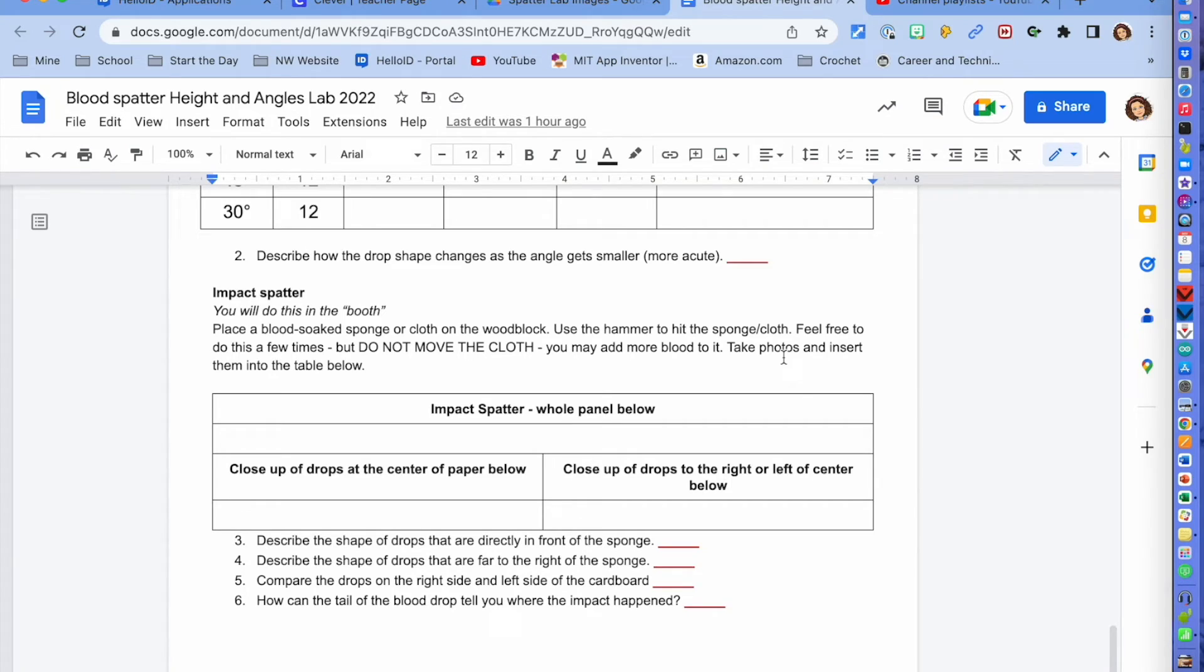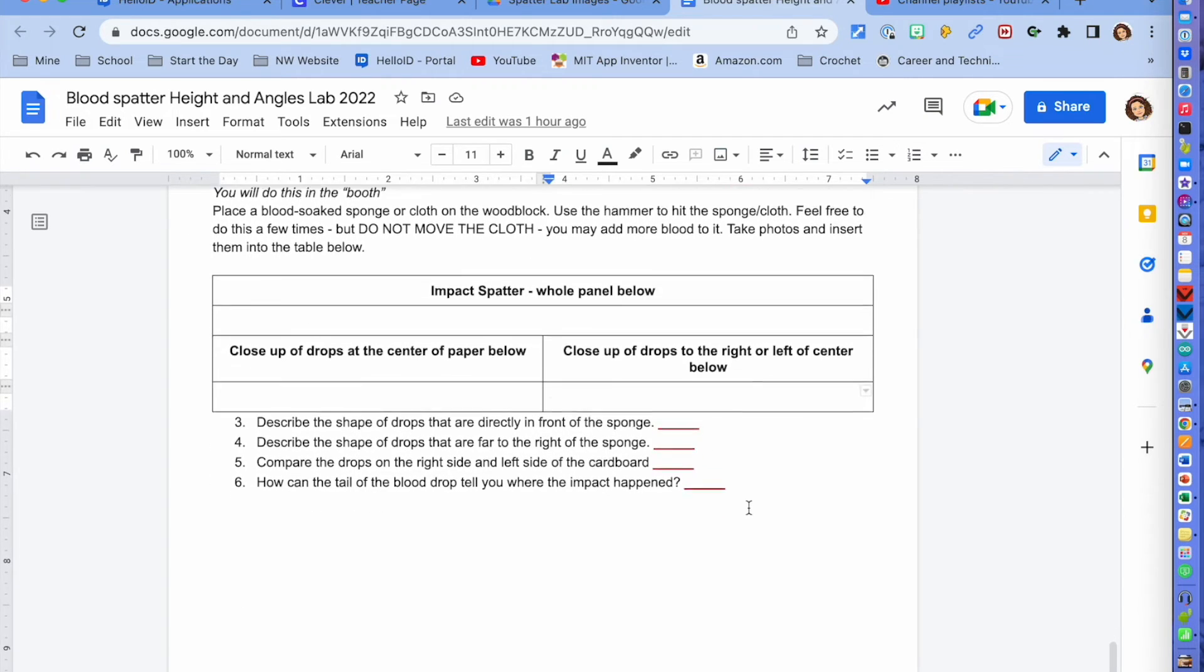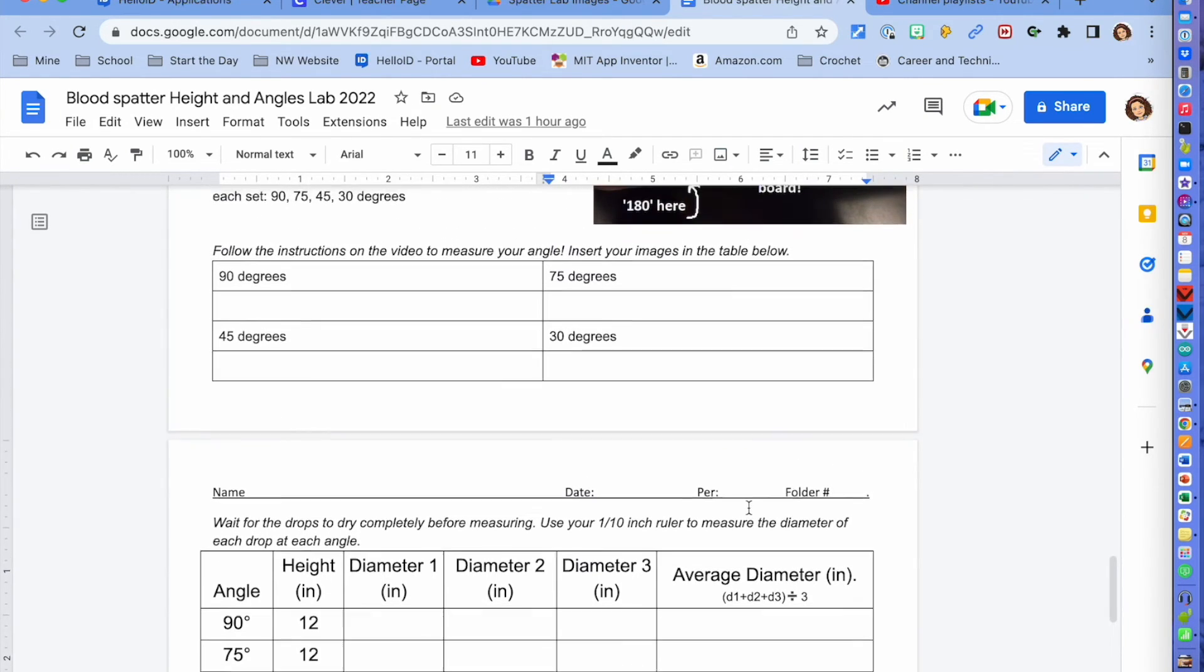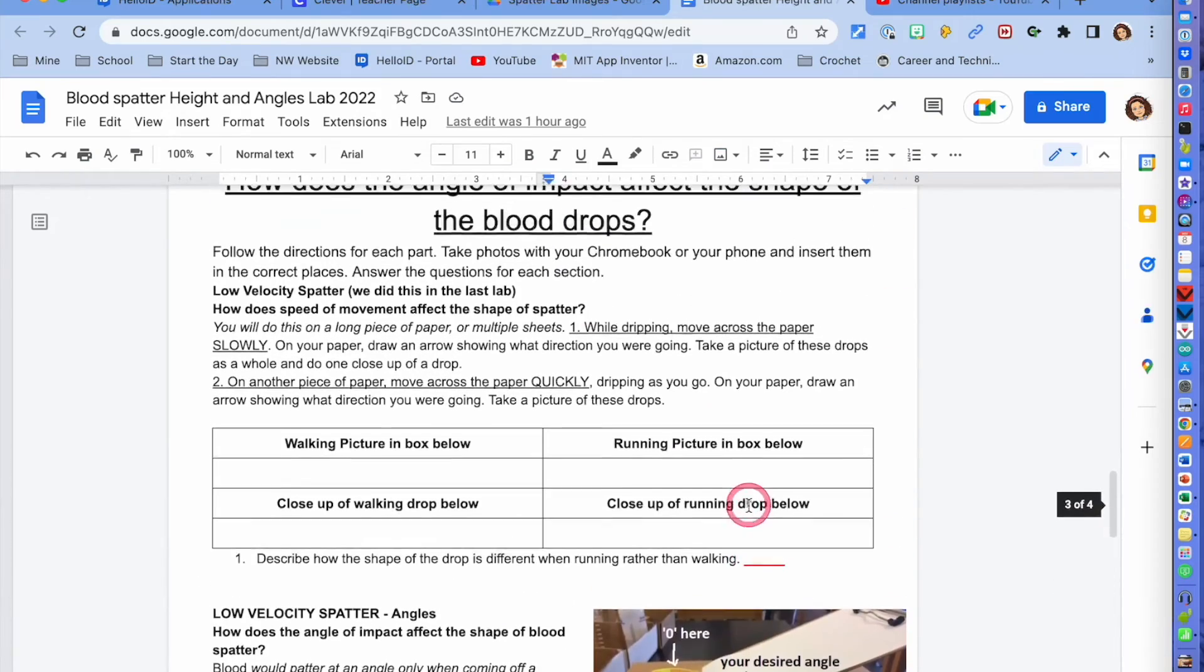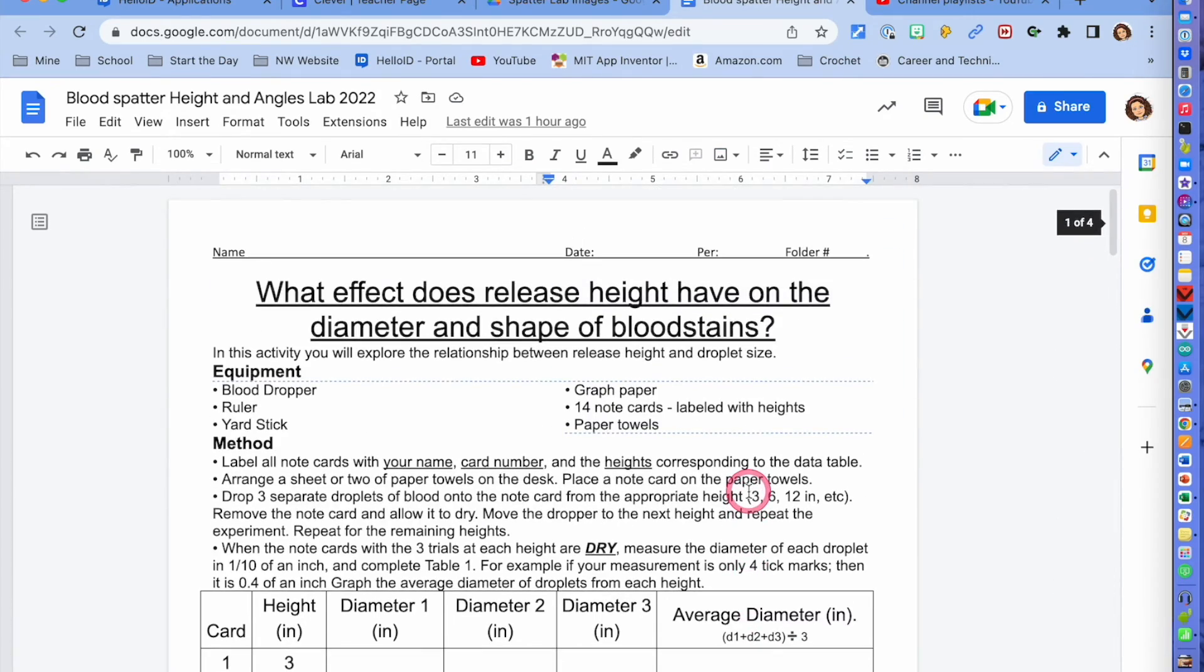So you're going to have one image of the whole panel, close-up drops at the center and close-up drops on either the right or the left to finish out the lab. All right so that's what you're going to do and where you're going to fill it in on your worksheet.